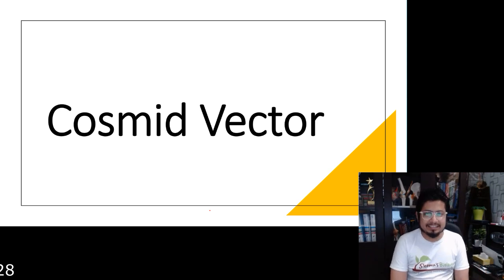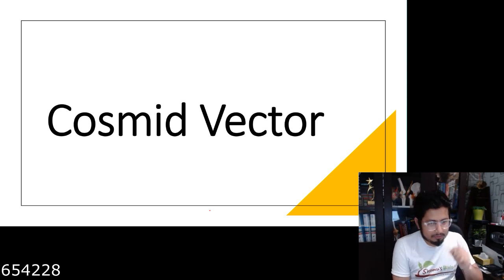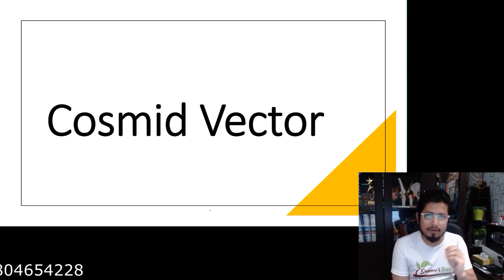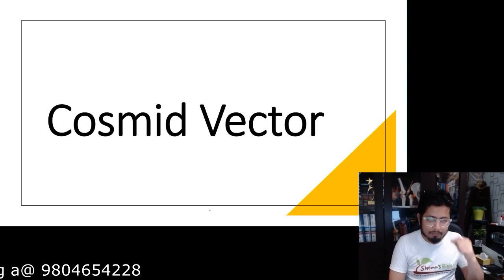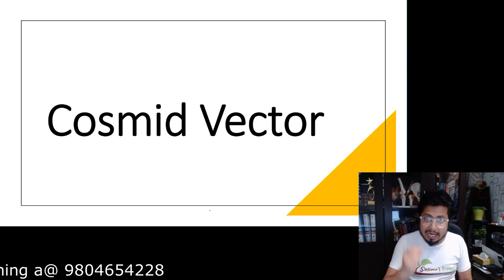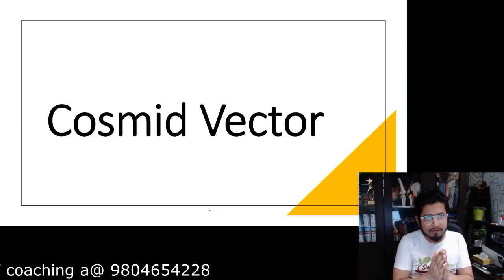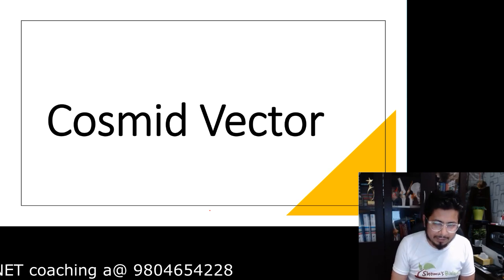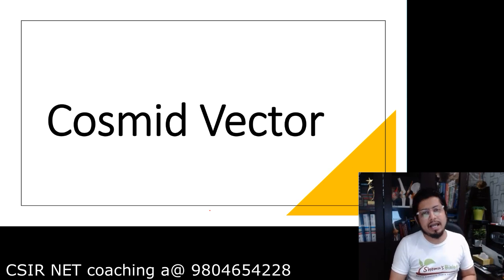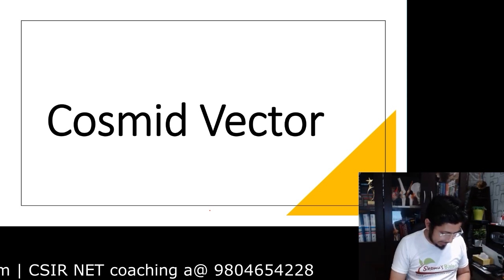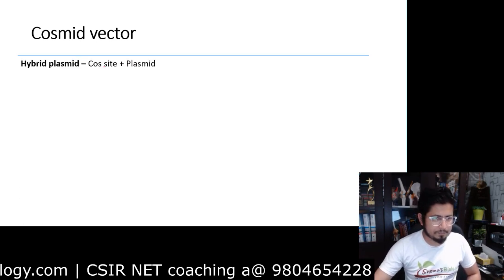This is the time to talk about Cosmid vector. In the last lecture we talked about the phage vector as a vector and the plasmid as a vector. Now we take the best parts from the plasmid and best parts from the bacteriophage and combine them together to get Cosmid as a vector. Cosmid gives us two advantages: one from the plasmid side and one from the bacteriophage side. Cosmid is a kind of hybrid vector.